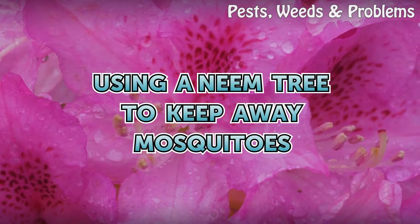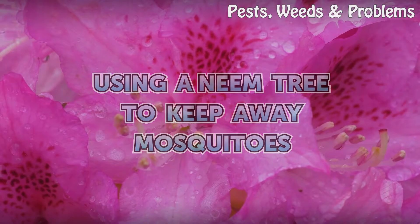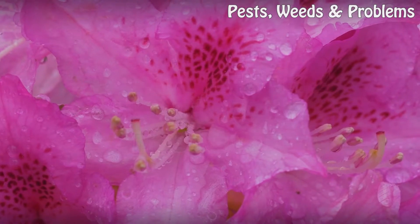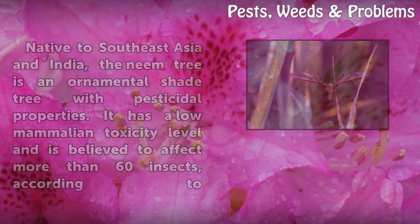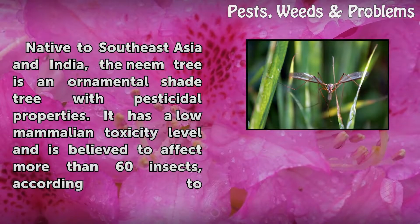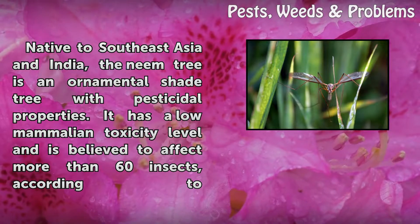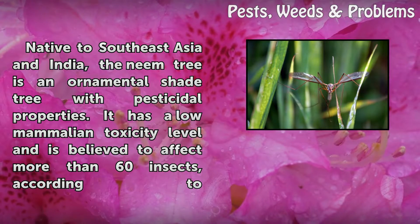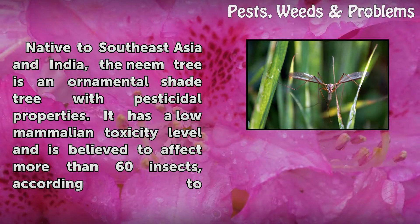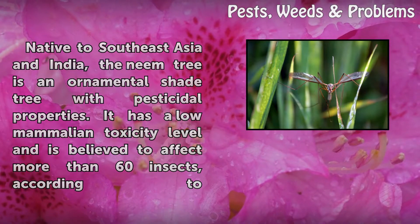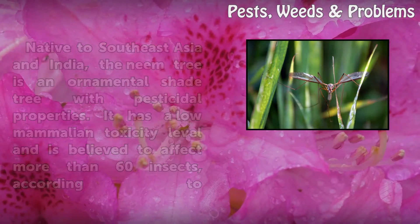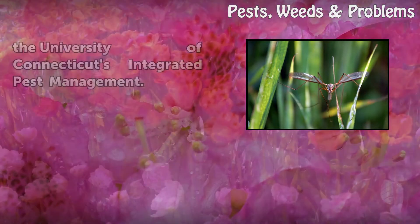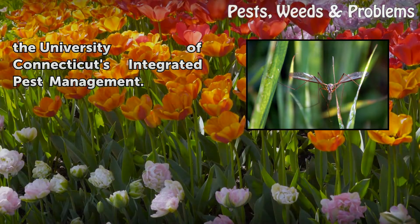Using a neem tree to keep away mosquitoes. Native to Southeast Asia and India, the neem tree is an ornamental shade tree with pesticidal properties. It has a low mammalian toxicity level and is believed to affect more than 60 insects, according to the University of Connecticut's integrated pest management.